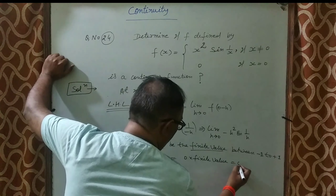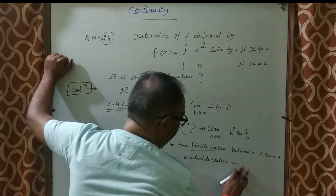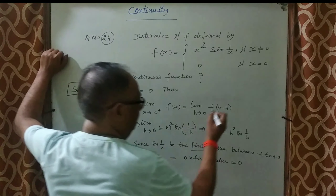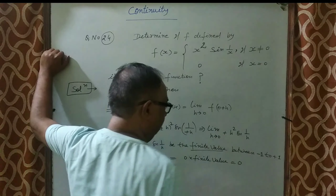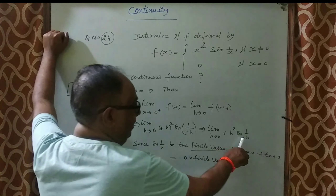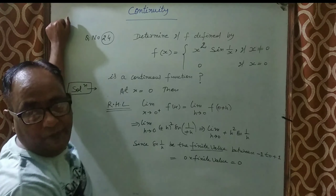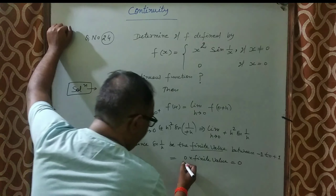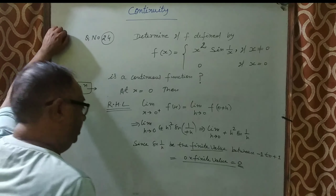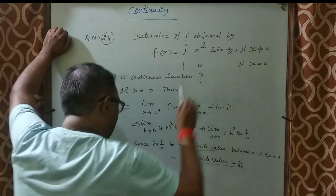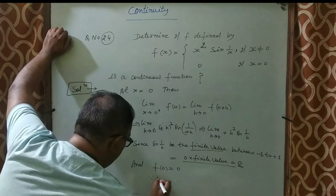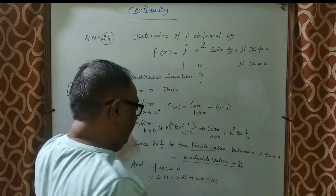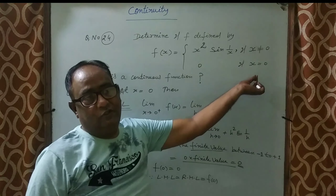So LHL = 0. Since sin(1/h) oscillates between −1 and +1 it is a finite value, and h² · (bounded value) → 0. Similarly RHL = 0, and f(0) = 0. Therefore LHL = RHL = f(0) = 0, so the function is continuous at x = 0.